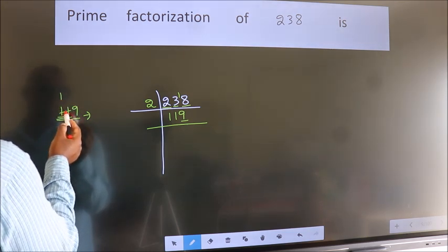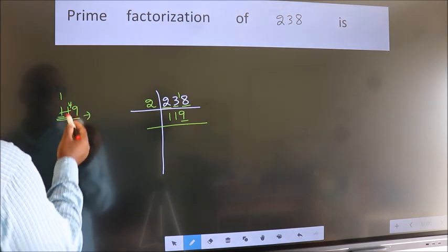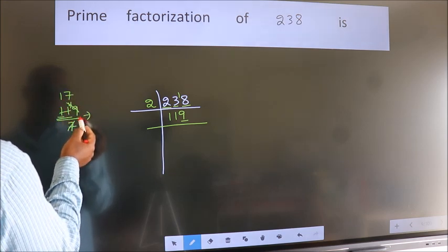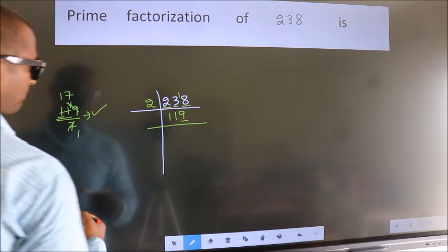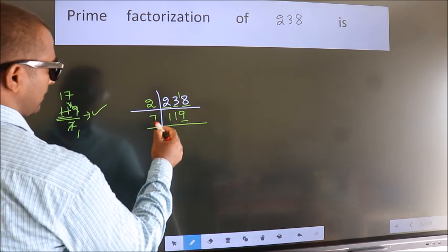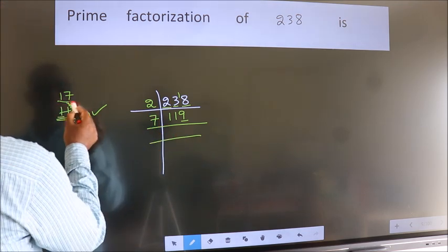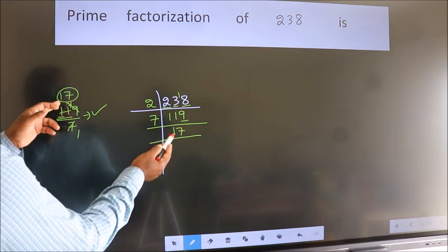11 minus 7 is 4, 4 carried forward 49. When do we get 49 in 7 table? 7 times 7 is 49. No number has been left out, so this is divisible by 7. So 7 here, and here we should write this number 17.